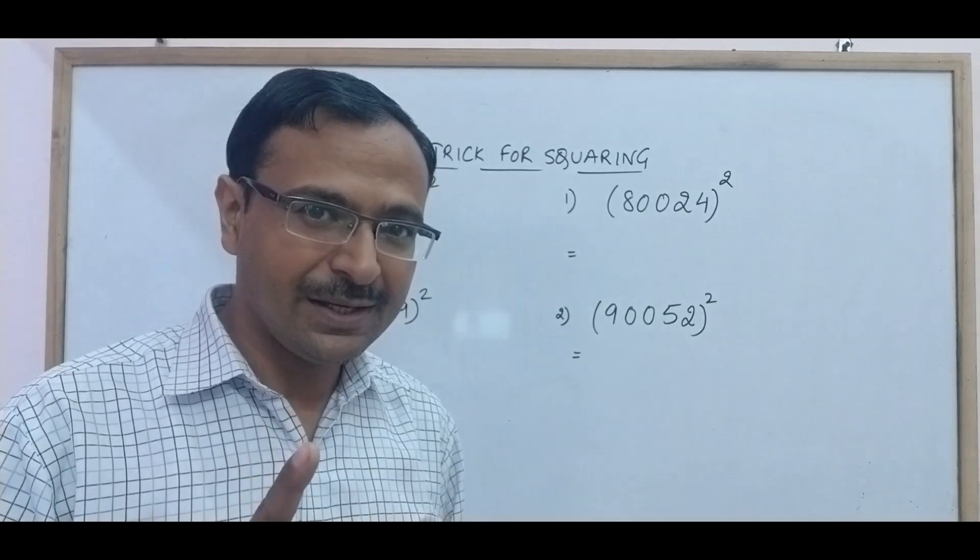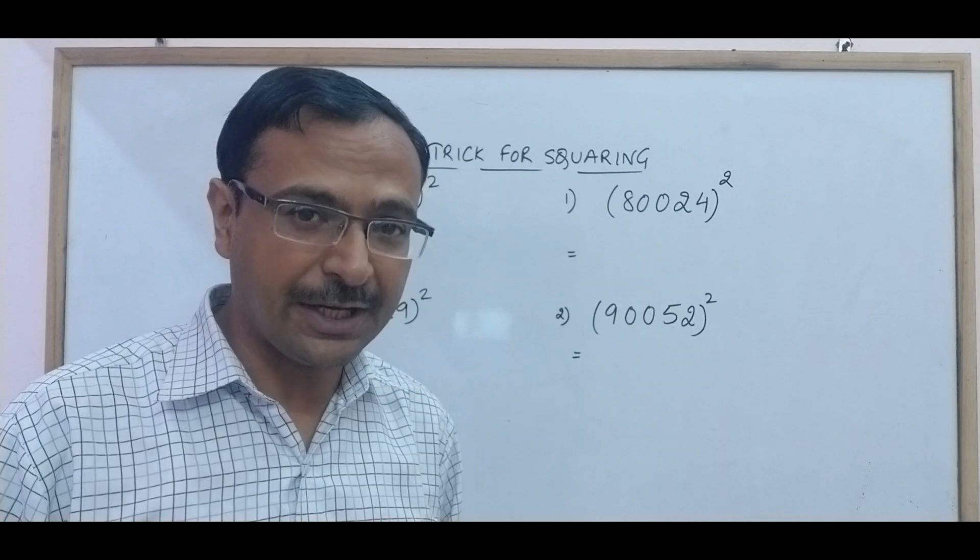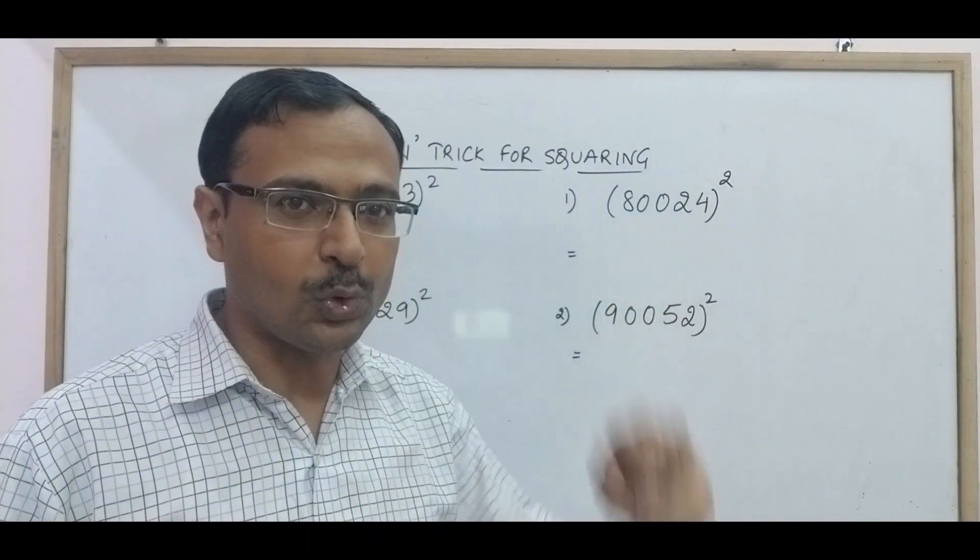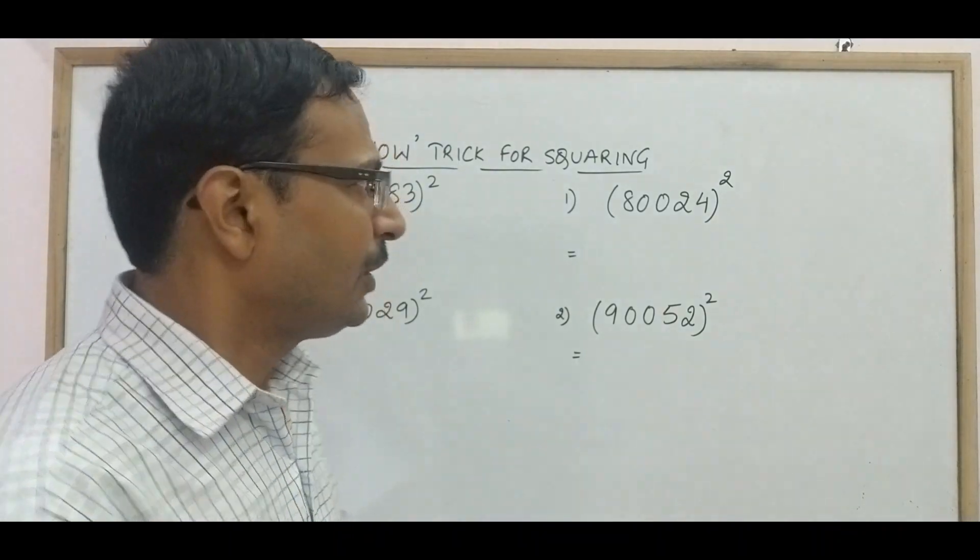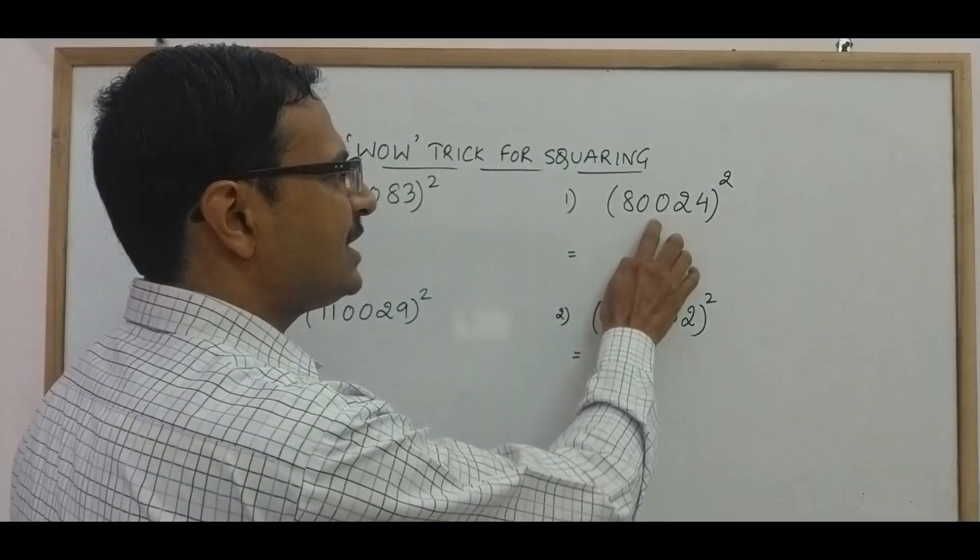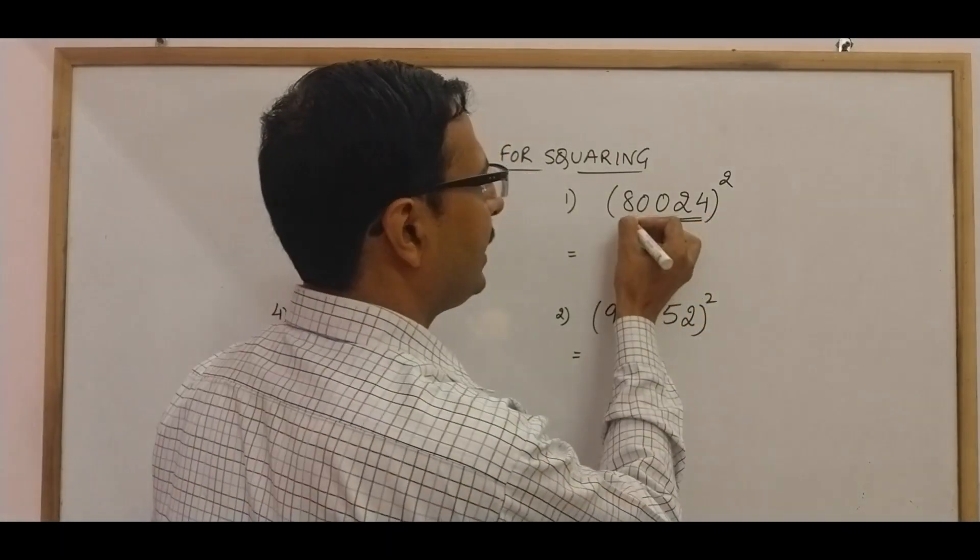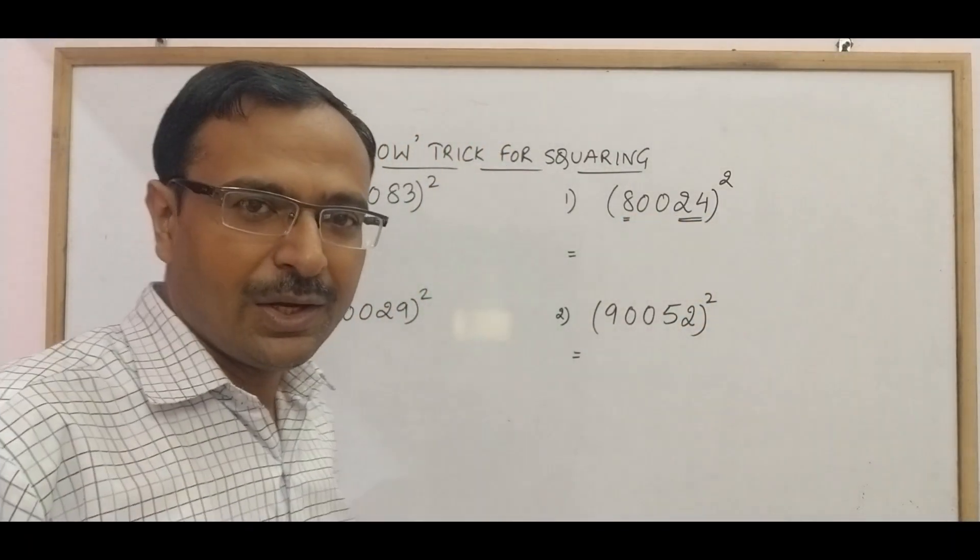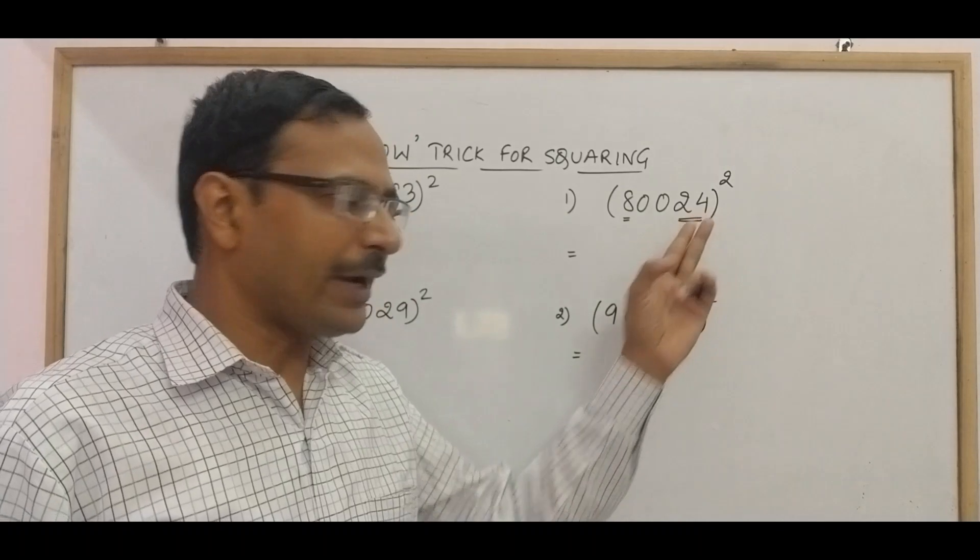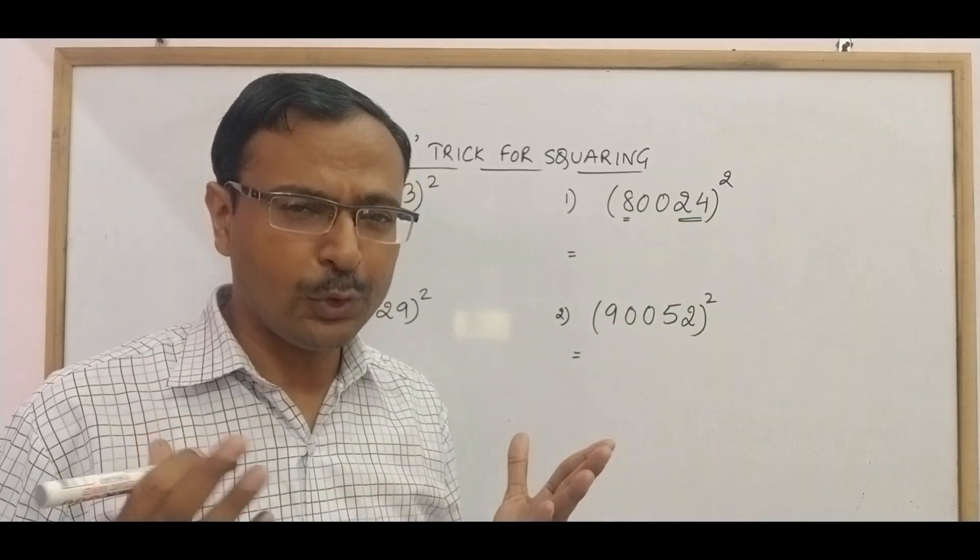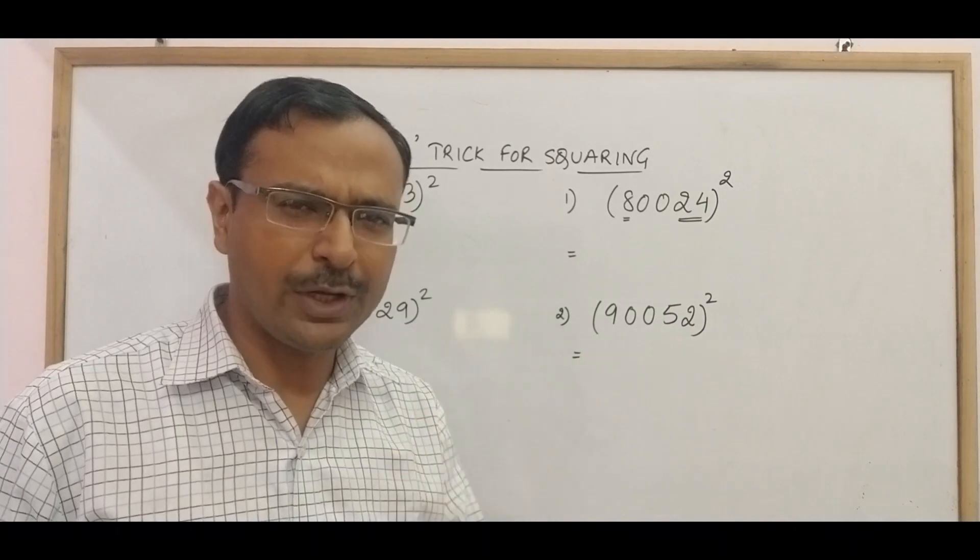Let's see the basic process of getting to the answer by taking one example of 80024 whole square. Now irrespective of these two zeroes, we have this 24 here and 8 here. And you know the square of 24, right? Even if you don't know the square of 24, you can multiply 24 by 24 in 2 or 3 seconds.